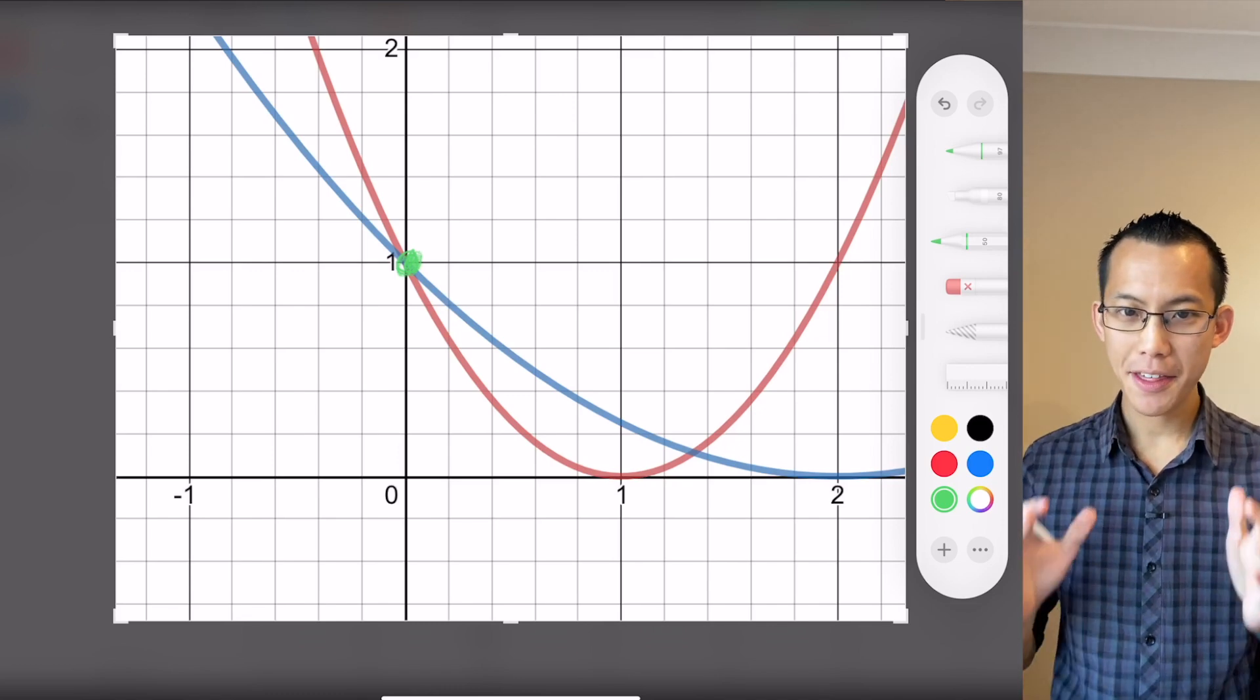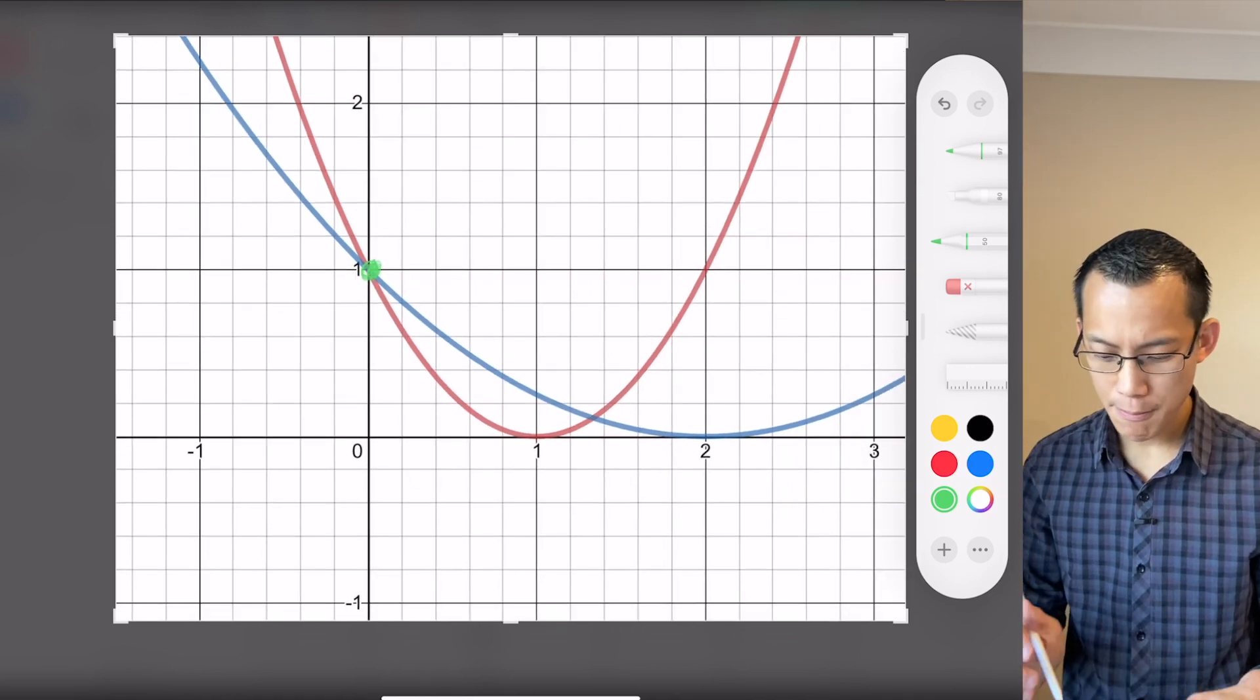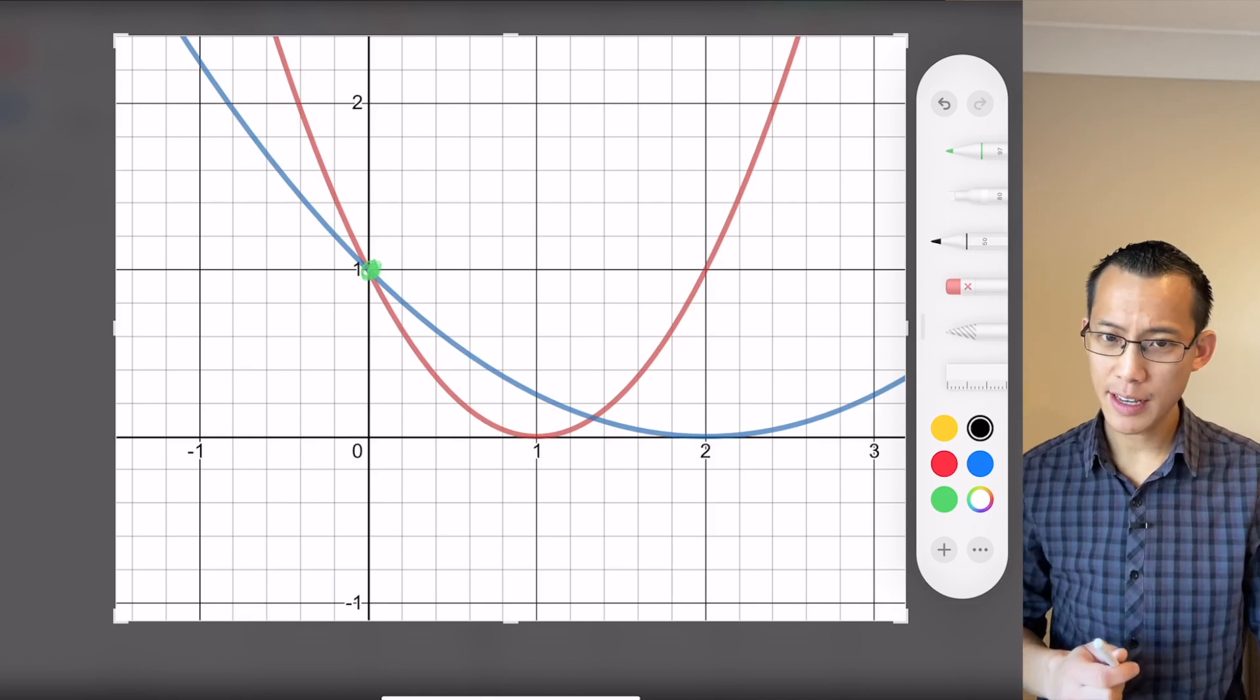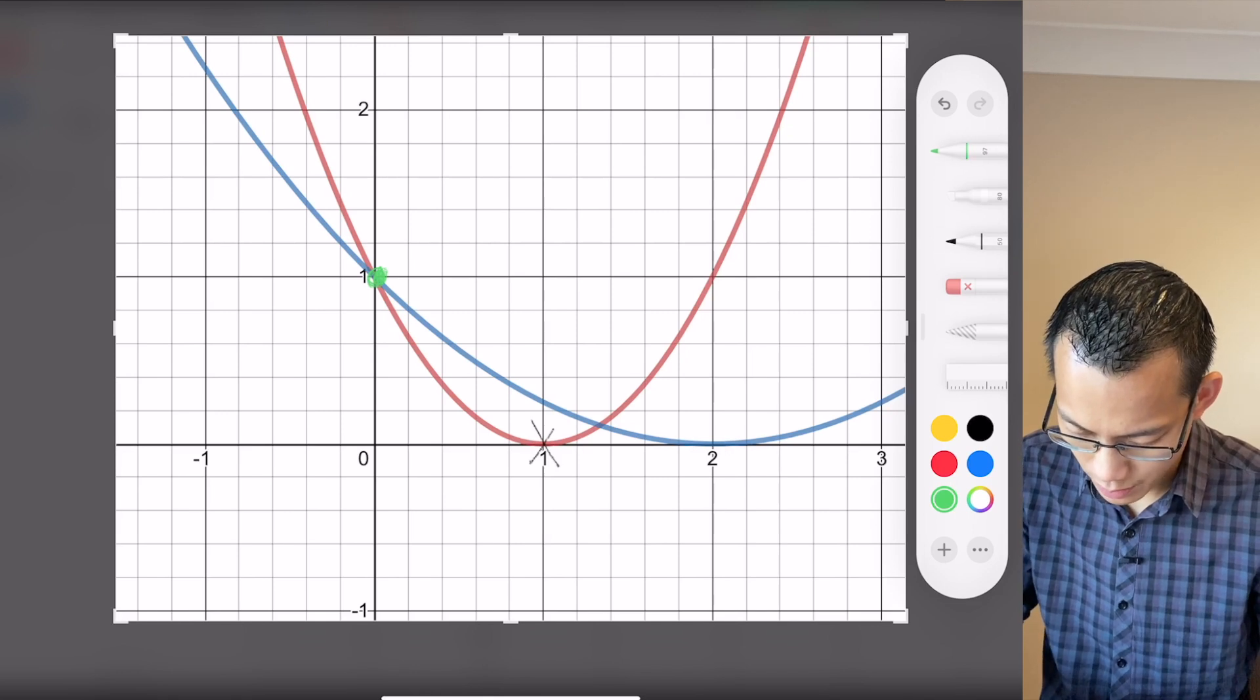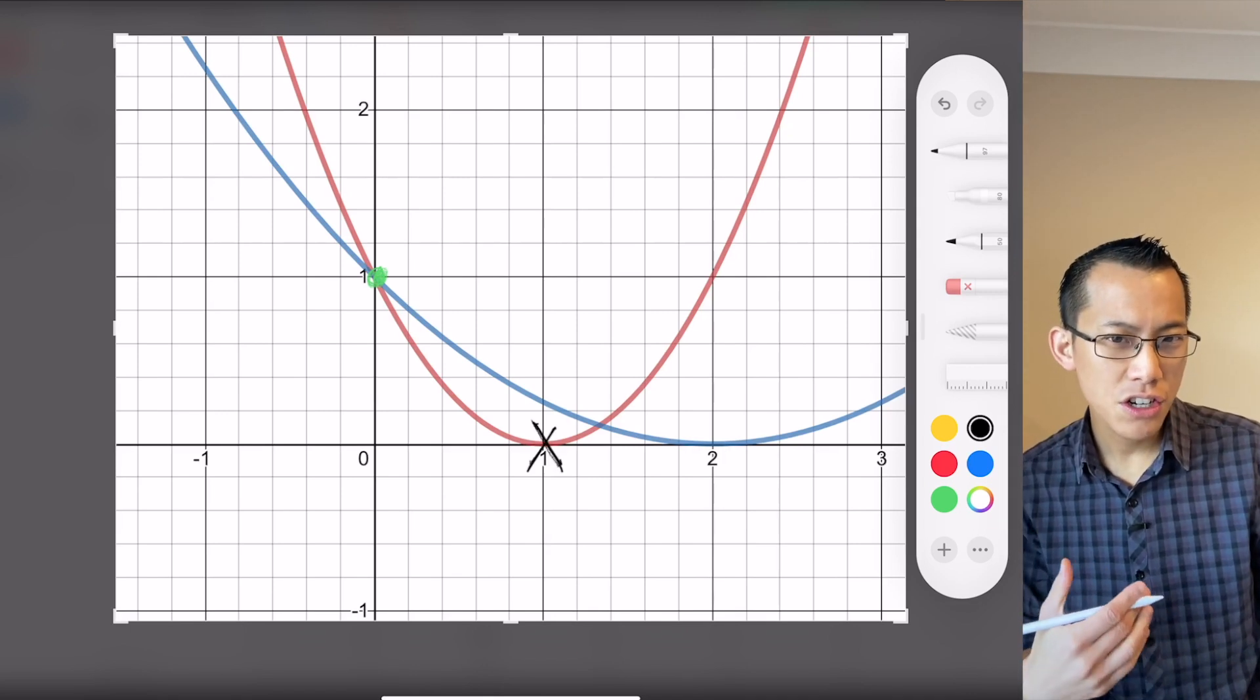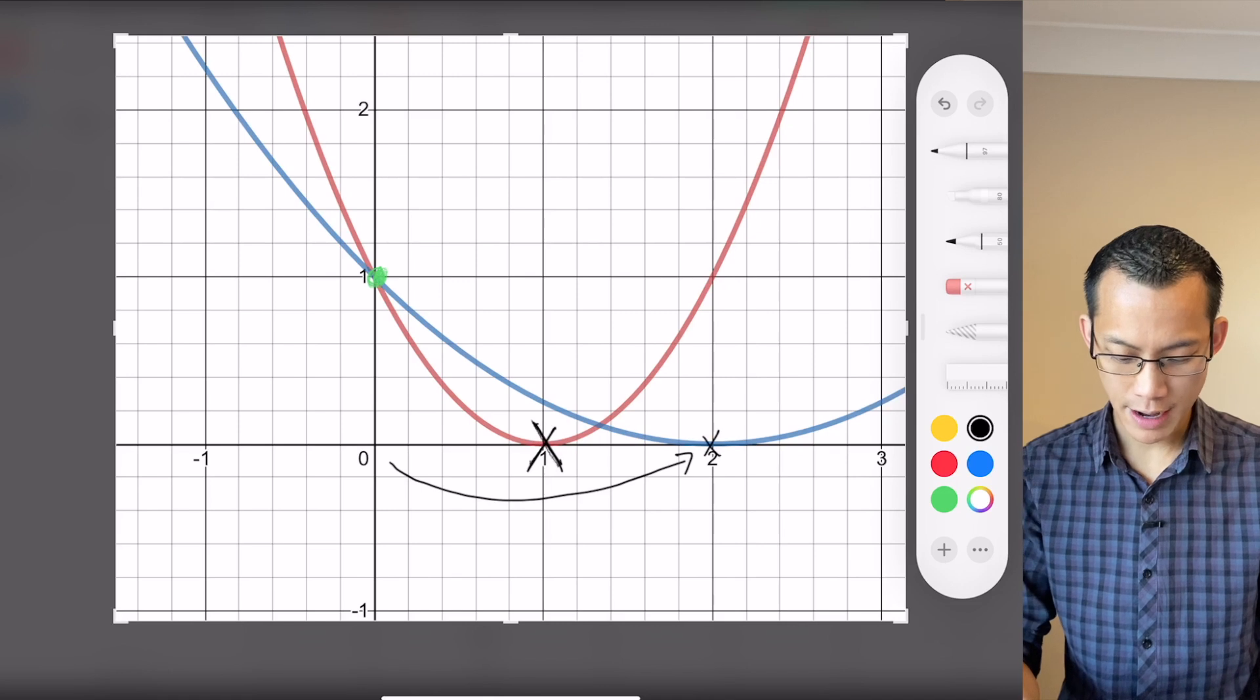But every other value on the graph moves or it stretches out, it dilates. Let's have a look at some of these spots in particular. Let's have a look at the x-intercept for example. The x-intercept used to be at 1, right in there. And where has the new x-intercept appeared? Well, it's stretched all the way over to 2, there it is. Now, have a think about that for a second. The x-intercept was 1 and now it's stretched all the way over to 2.